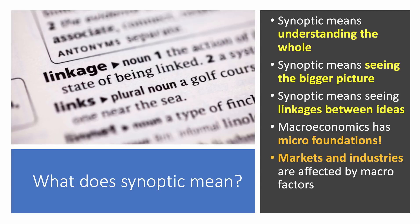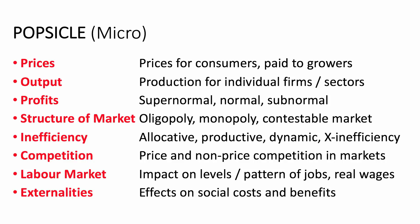Equally, it works the other way — markets and industries are also affected by macro factors. For example, the travel industry and transport sector are affected by the world price of oil and gas. Lots of industries are affected by global shifts in production, investment, interest rates and so on. So synopticity means understanding the bigger picture, and that's what paper three is going to try to test. Here are two great mnemonics: POPSICLE for micro and DIGESTIVE for macro.